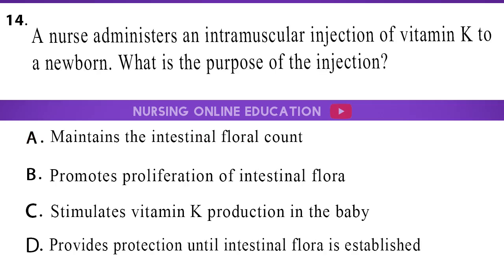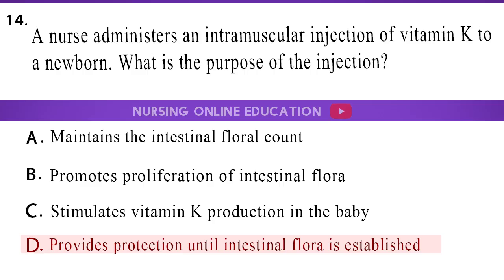Question 14: A nurse administers an intramuscular injection of vitamin K to a newborn. What is the purpose of the injection? A. Maintains the intestinal flora count. B. Promotes proliferation of intestinal flora. C. Stimulates vitamin K production in the baby. D. Provides protection until intestinal flora is established. The answer is option D: Provides protection until intestinal flora is established.